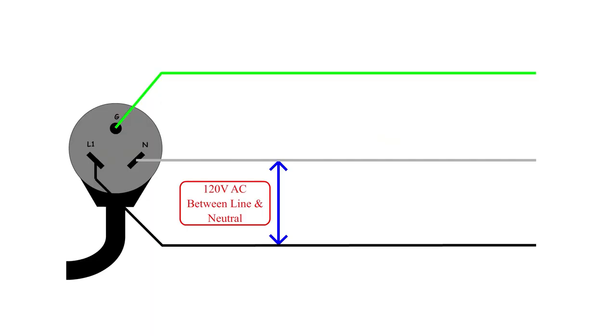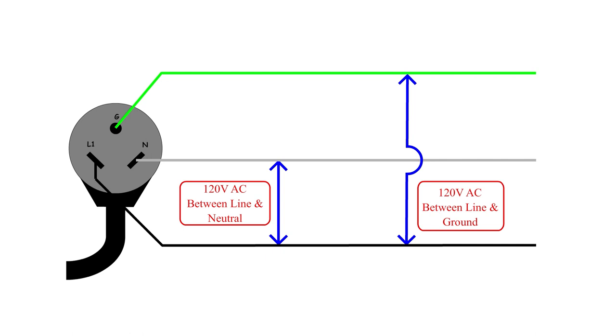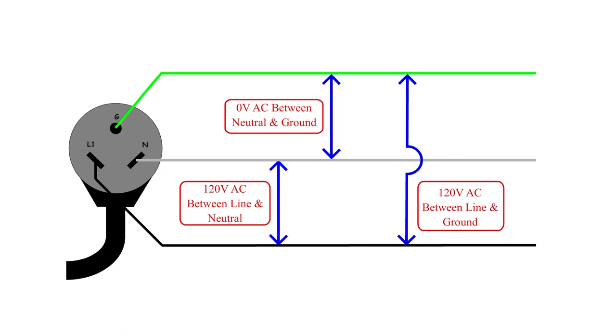The voltage developed across line to neutral is our normal flow of power — 120 volts AC to power all AC loads in our rig. The second voltage developed is from line to ground, also 120 volts AC. Importantly, there should be zero or close to zero — maybe just a couple of volts — of potential between the neutral and the ground connection. If you're checking that voltage and get anything higher than a couple of volts, you know there's an issue that somebody needs to look at.